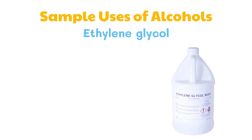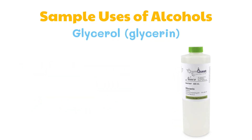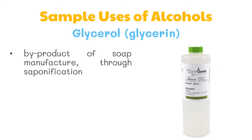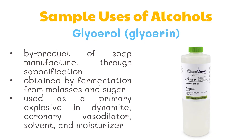Ethylene glycol is used for automotive antifreeze, as an ingredient in hydraulic fluids, printing inks, and paint solvents, and as a reagent for explosives. Lastly, glycerol. It is a by-product of soap manufacture through saponification. It is obtained by fermentation from molasses and sugar, and is used as a primary explosive in dynamite, coronary vasodilator, solvent, and moisturizer.